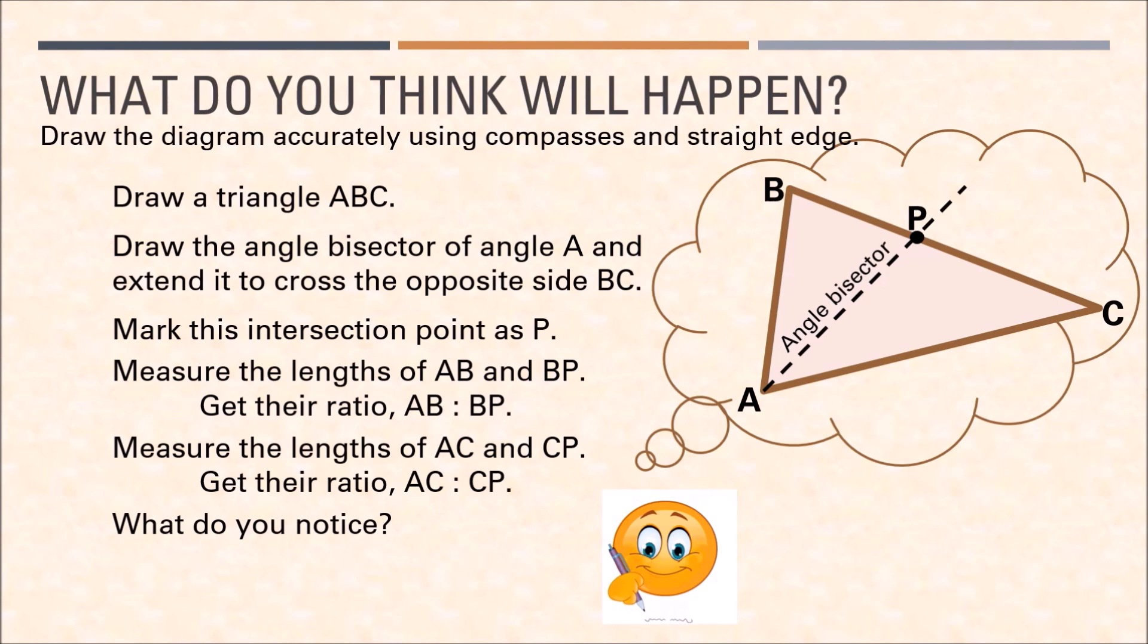Let's take a look at the next example. What do you think will happen? On an A4 sheet of paper draw the diagram accurately, follow the steps. You'll discover how a perpendicular bisector of one angle of a triangle will cut the side opposite to the angle bisected. There is something interesting about it. Pause this video and come back when you're done to check your work.